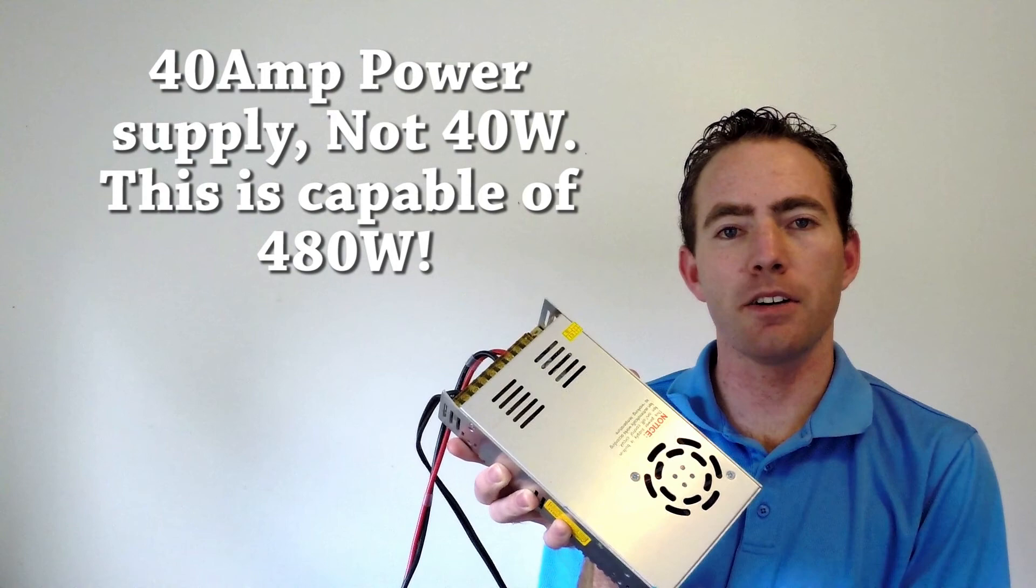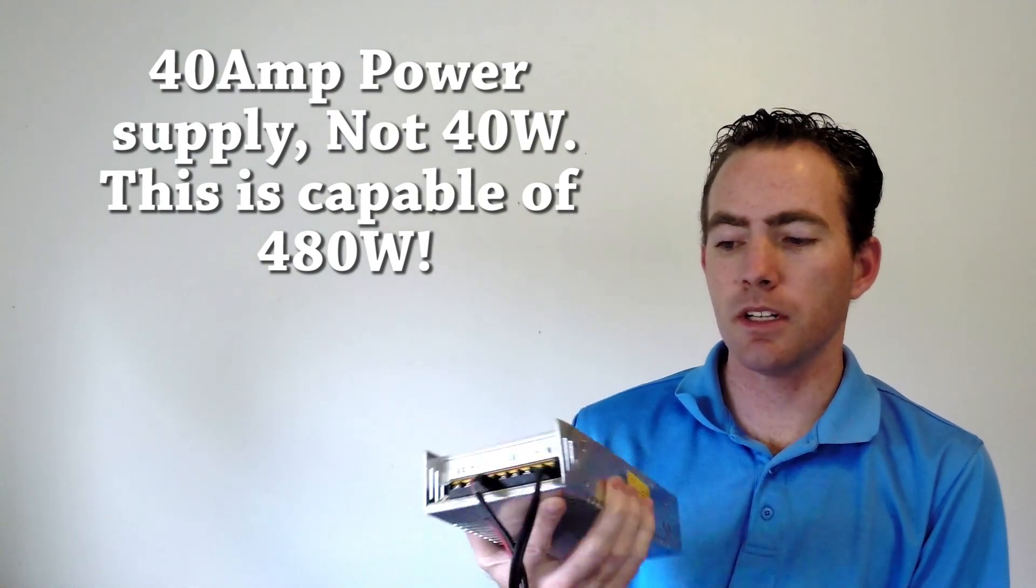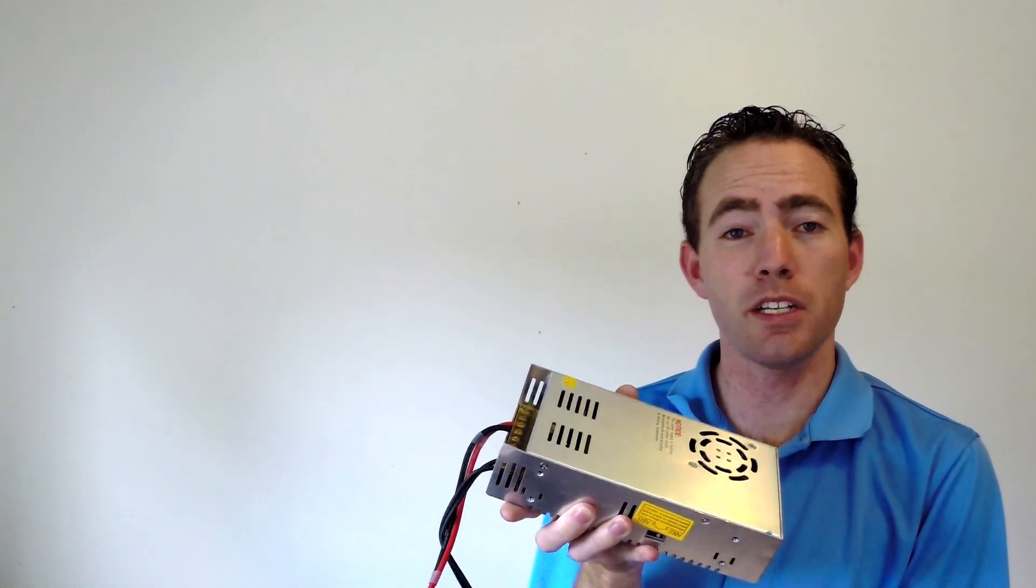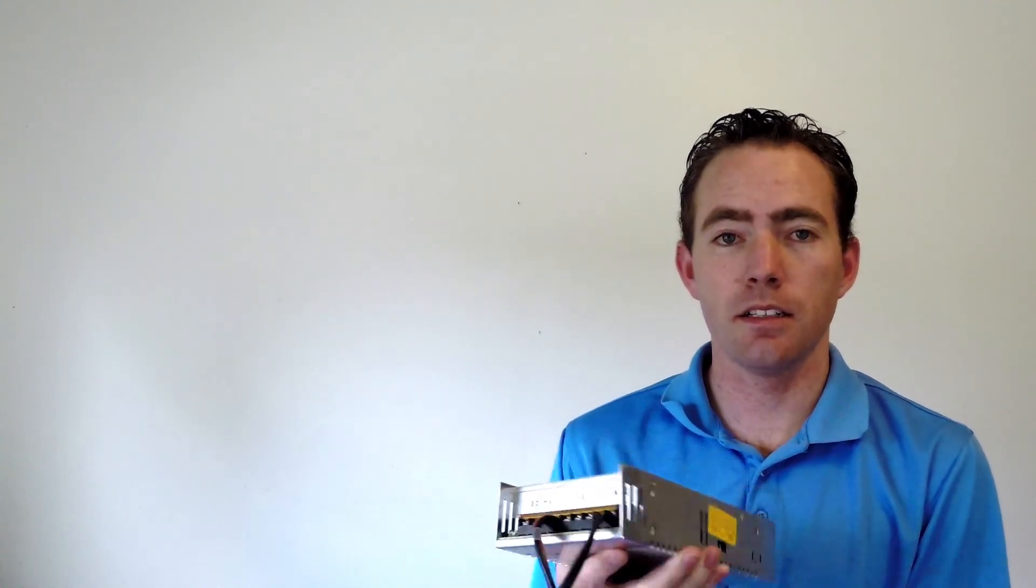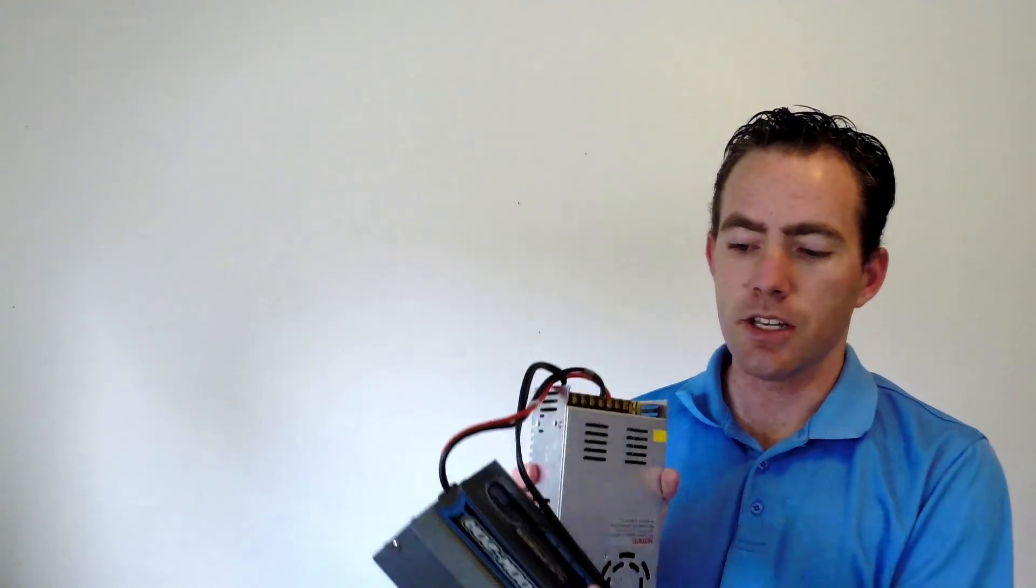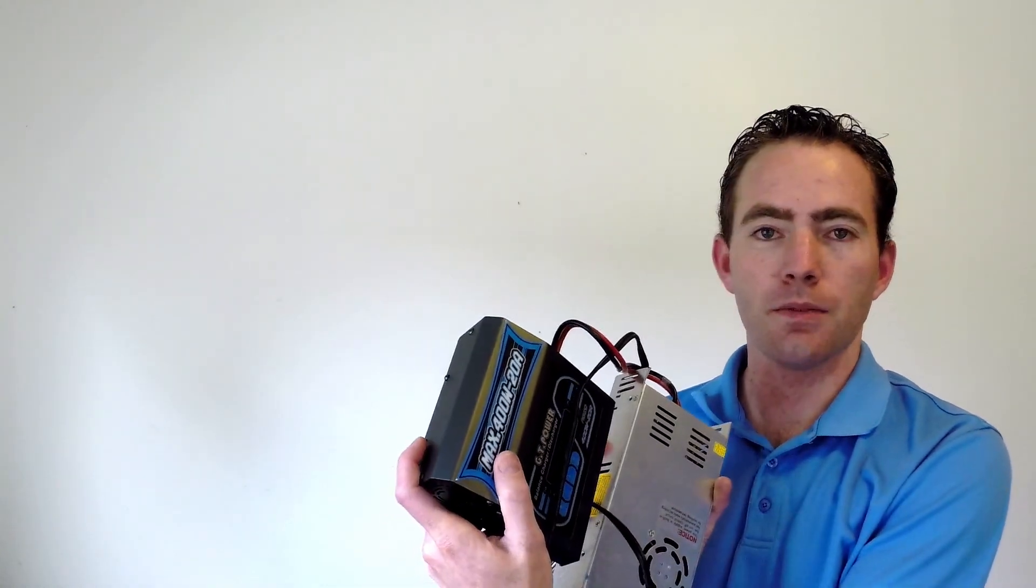So just as an example of that, this is the 40 watt power supply. This one creates 12 volt. I actually have it set to put out 14.1 volts because it has a voltage variable adjustment on it.